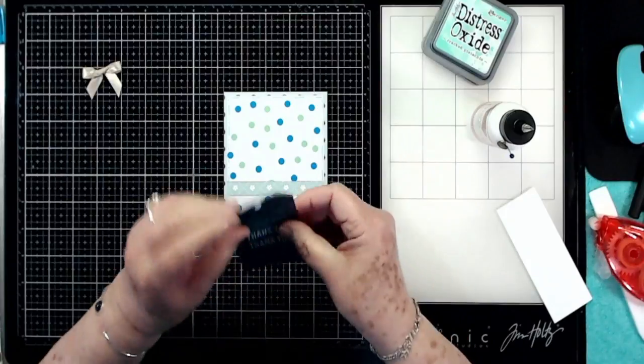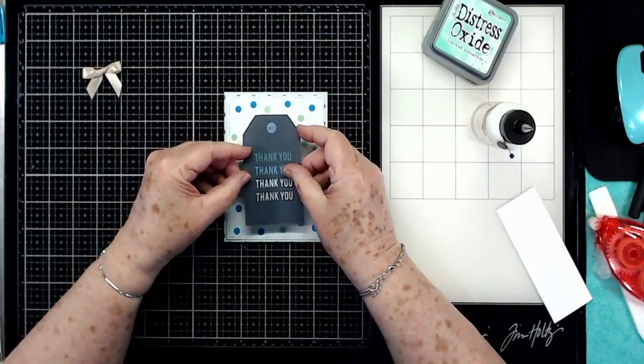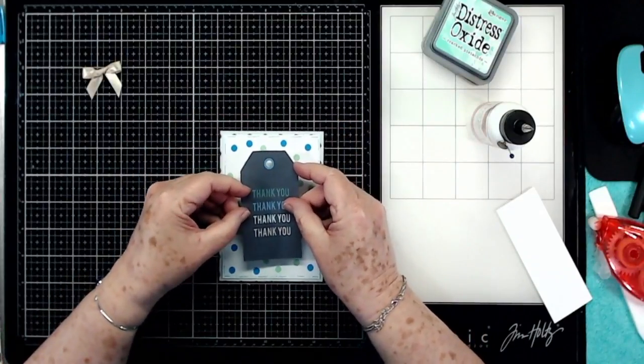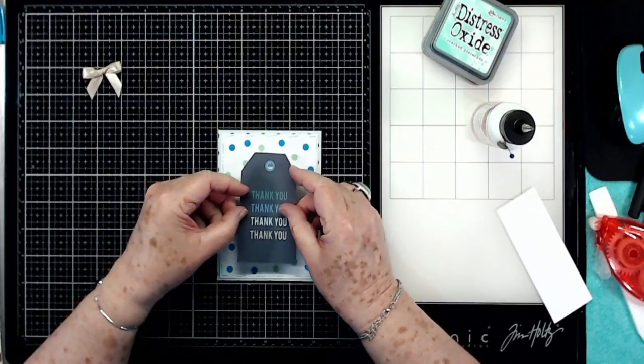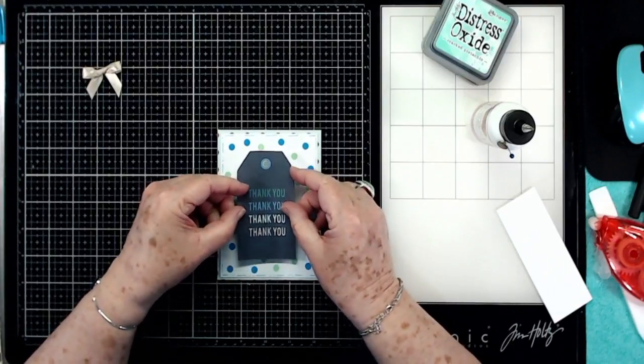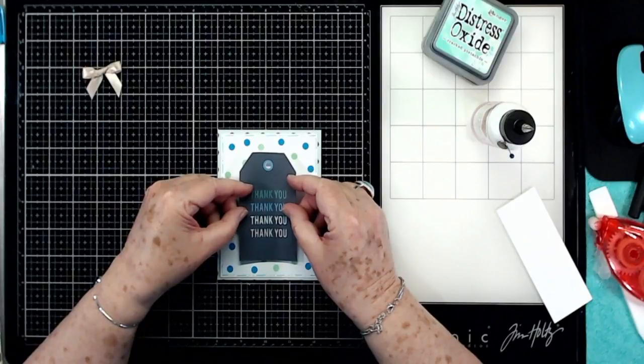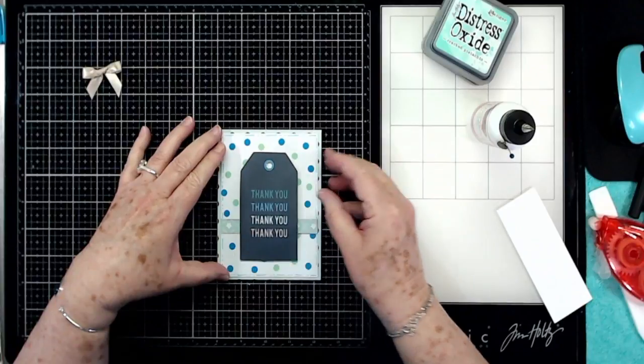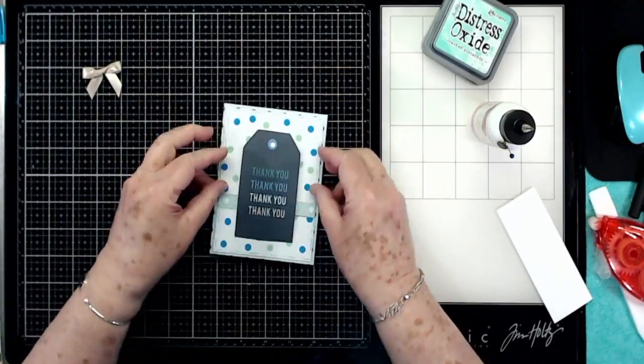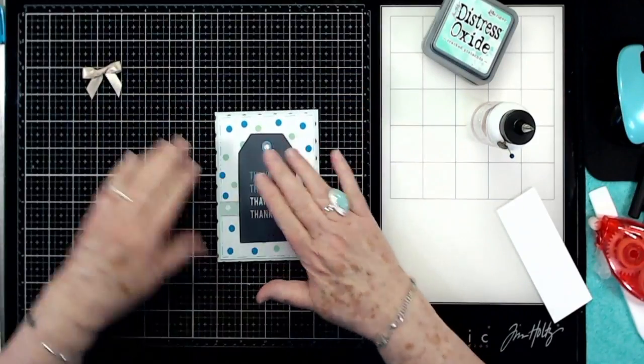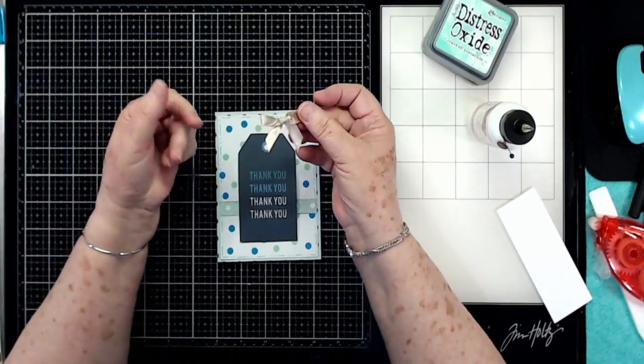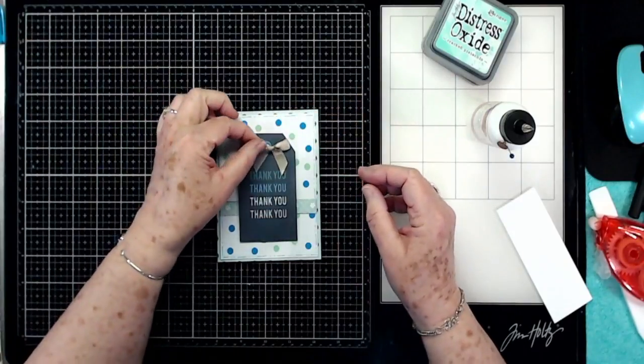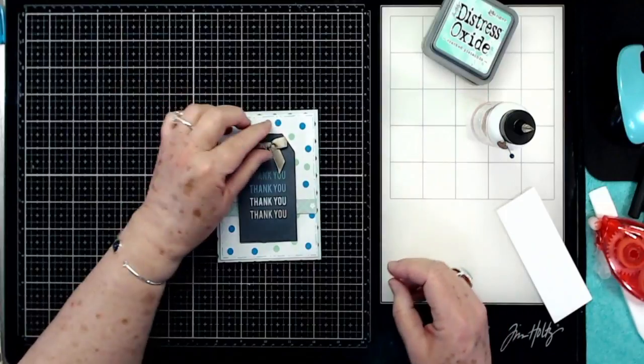Now we're going to put this down. I'm going to try to center this up without having to get my head in the shot. Hold it up - that looks pretty good. So put that down right there. And then I tied just a little tiny bow, and I'm going to put that at the top right there.